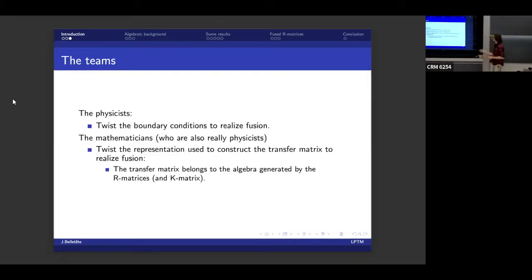There's the second team, which I will call the mathematicians, although they are really physicists anyway, but they're closer on the math-physics axis to the math side. And their idea was a bit different. They said, well, what I'm going to do, I'm going to twist the representation that is used to construct the transfer matrix to realize fusion.